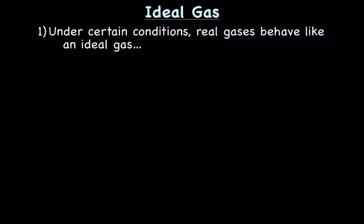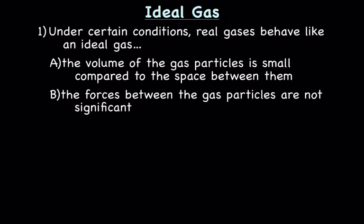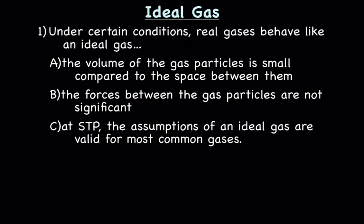Under certain conditions, real gases behave like an ideal gas. This is when the volume of the gas particles is small compared to the space between them—basically, there's a lot of space between each of the gas particles. The forces between the gas particles are not significant, and at STP, the assumptions of the ideal gas are valid for most common gases.